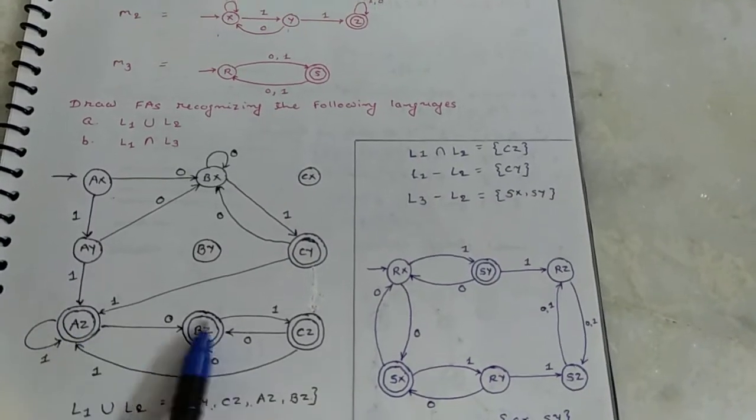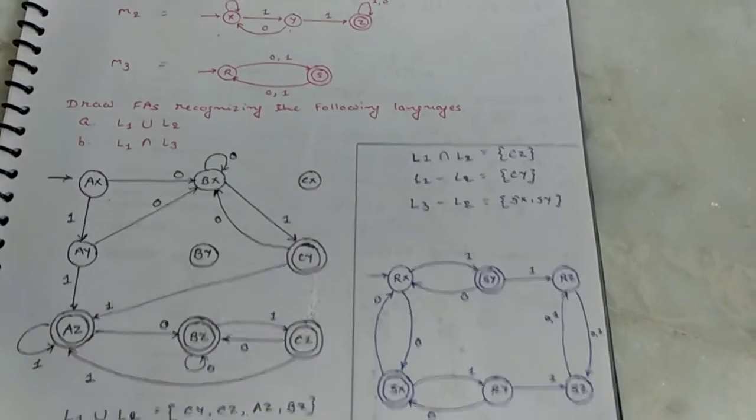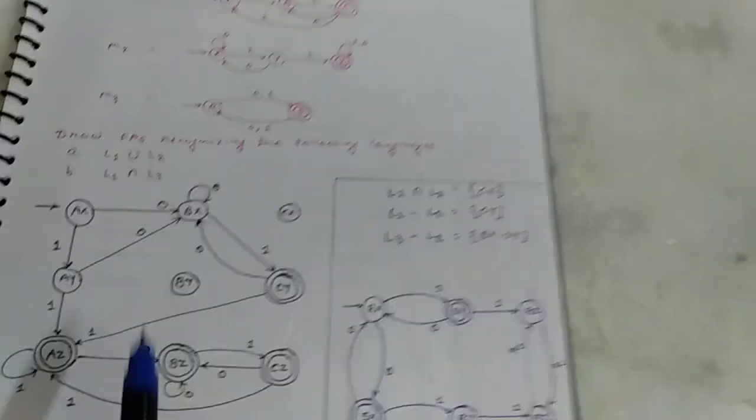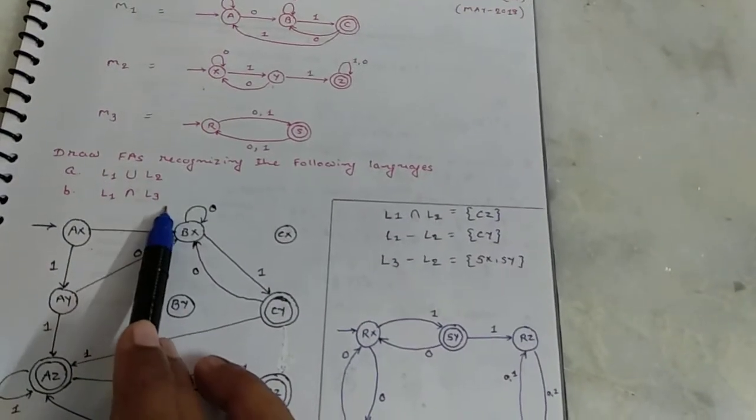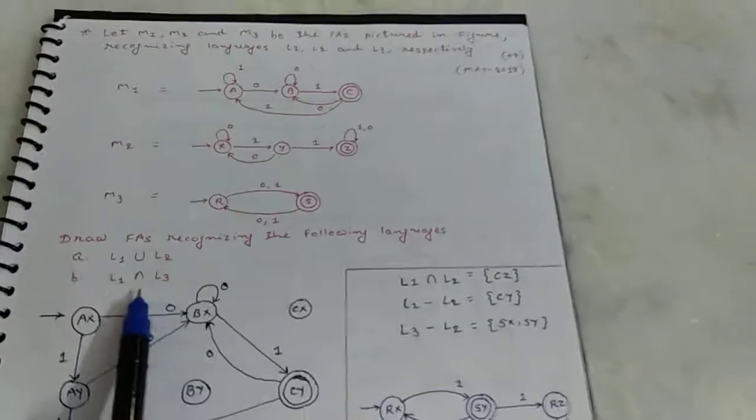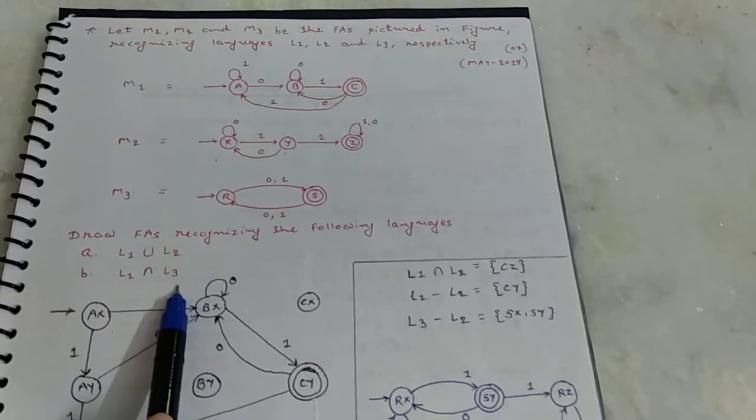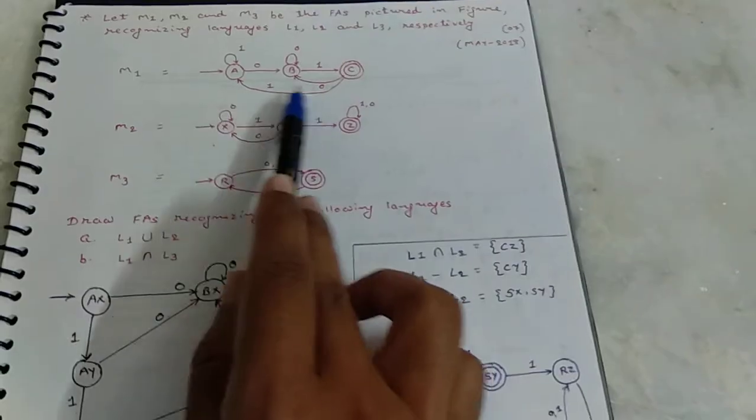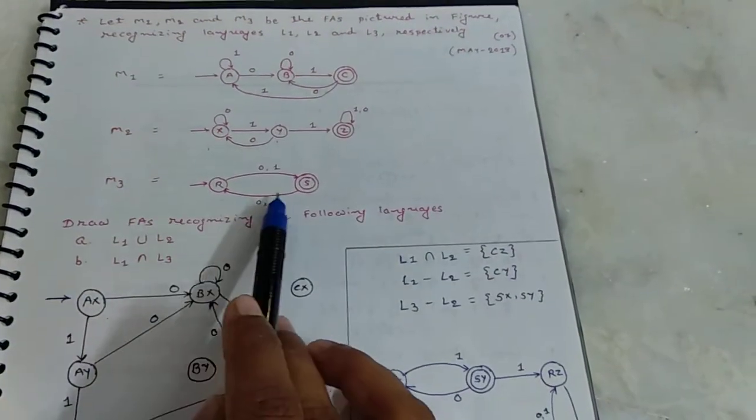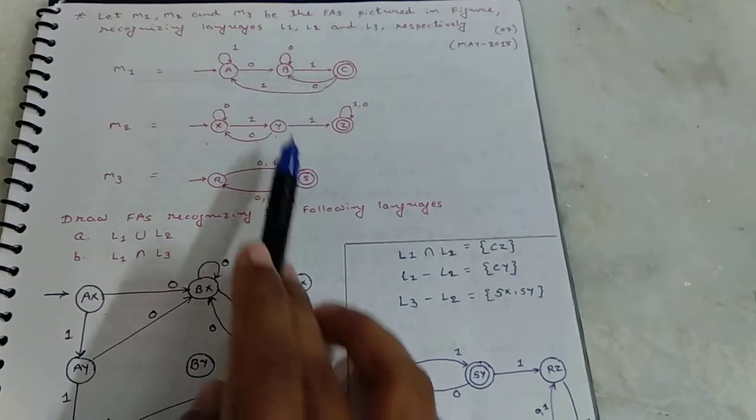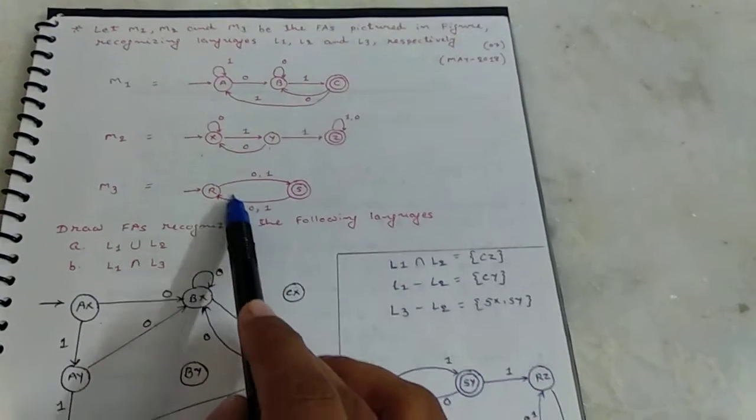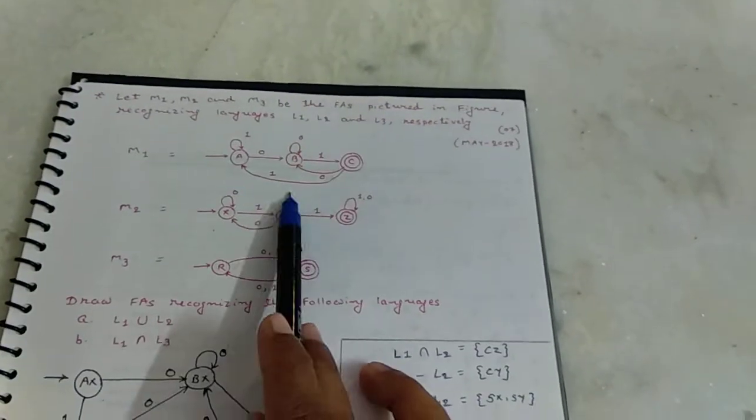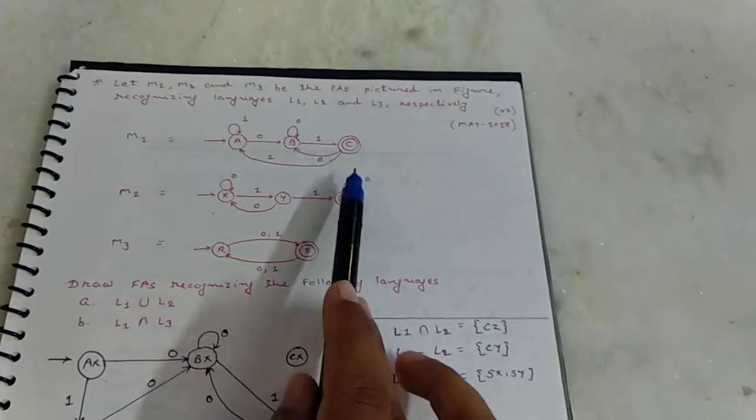Next, L1 intersect L3. So cross product of L1 and L3. Here in L1, there are 3 states. In L3, there are only 2 states. Then cross product is AR, AS, BR, BS, CR, CS.